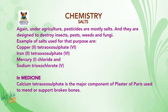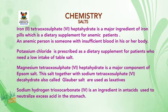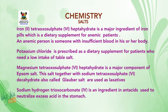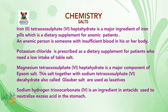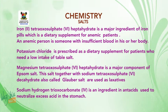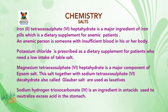In medicine, calcium tetraoxyl sulfate 6 is the major component of plaster of Paris used to mend or support broken bones. Iron 2 tetraoxyl sulfate 6 heptahydrate is a major ingredient of iron pills, which is a dietary supplement for anemic patients — an anemic person being someone with insufficient blood in their body. Potassium chloride is prescribed as a dietary supplement for patients who need a low intake of table salt. Magnesium tetraoxyl sulfate 6 heptahydrate is a major component of Epsom salt.